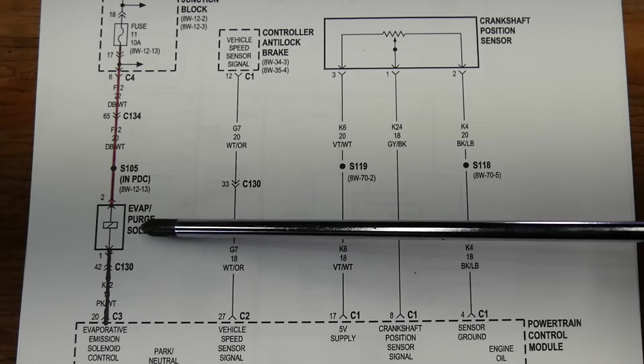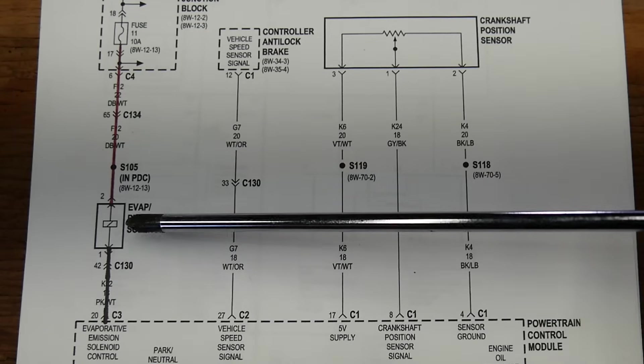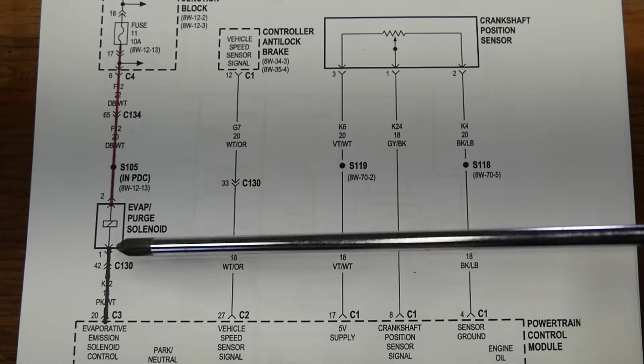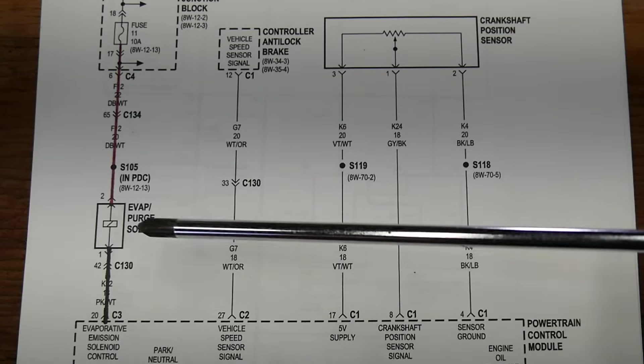That means there's always power supply to this load, the EVAP purge solenoid. And then when the computer decides to turn this on, it will supply ground to it, completing the circuit and turning on the EVAP purge solenoid.